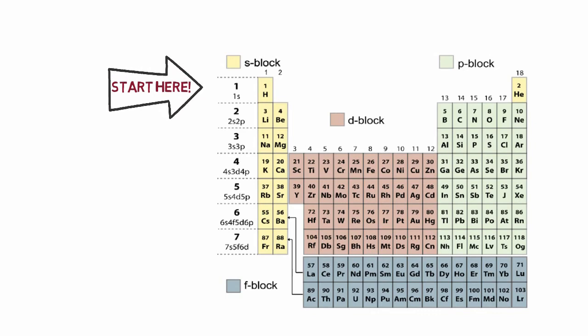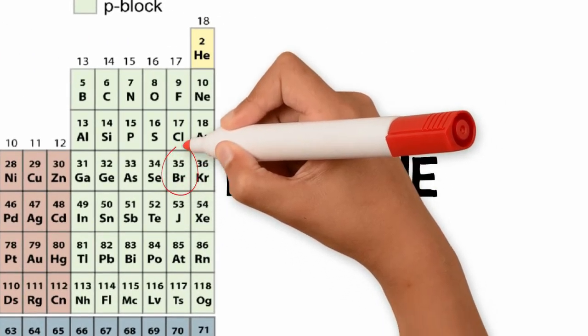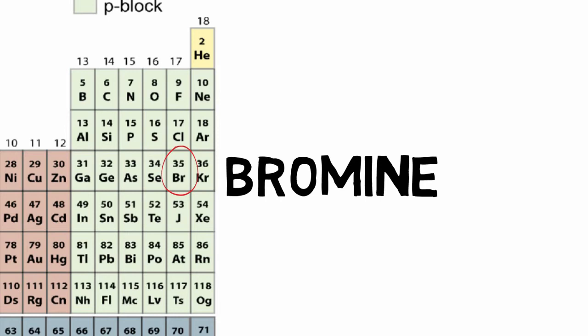Let's use it to write the electron configuration of a neutral bromine atom. A bromine atom has 35 electrons. Using the blocks in the periodic table,